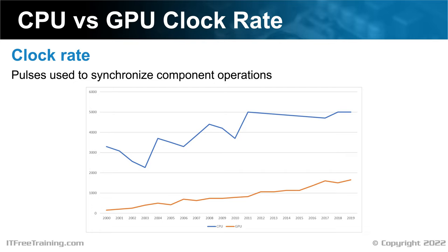You can see that the fastest CPU is still about three times as fast as the fastest GPU. However, clock rates can be a little misleading. Even though the CPU clock rate has leveled out since 2011, other improvements have meant the CPU is able to process more information. Clock rate is not the only thing to consider when looking at what you may be able to achieve.